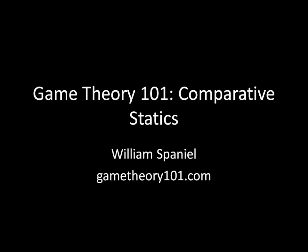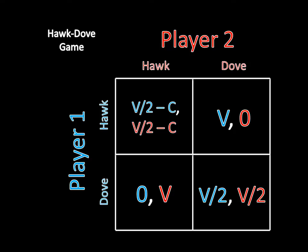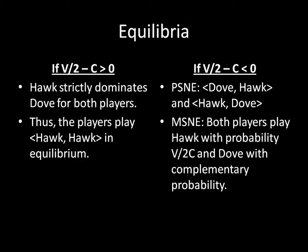If you remember, we just did a video on the Hawk-Dove game. We found out there were a bunch of different equilibria depending upon the parameters V, which was the value that they were fighting over, and the cost parameter C — the cost of fighting a war if it came down to fighting a war. We can see all the equilibria here on the screen.